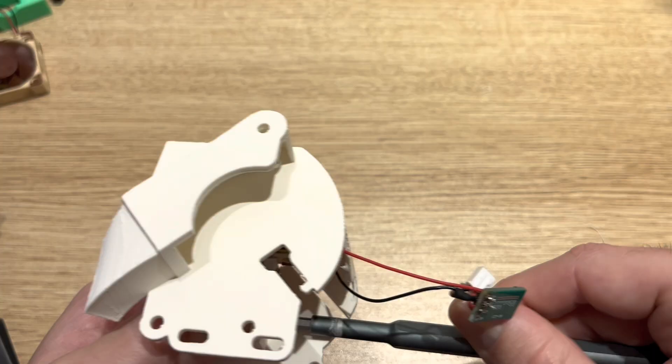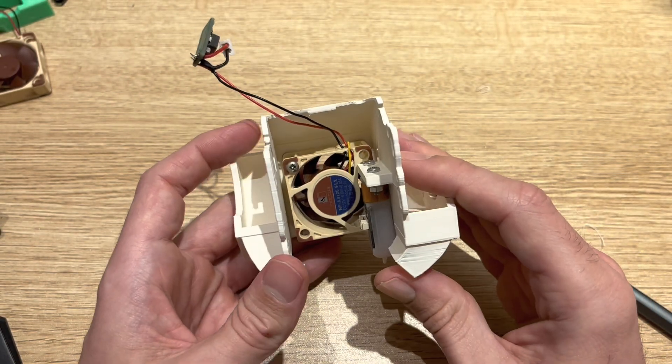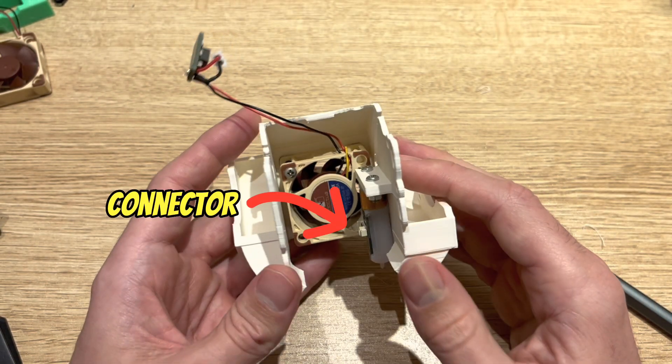Now with that out of the way we can see the BL Touch is installed and left the connector on the inside so I can run the cable to it.